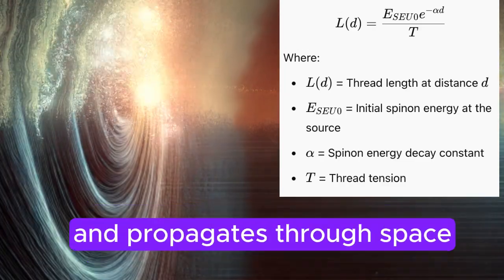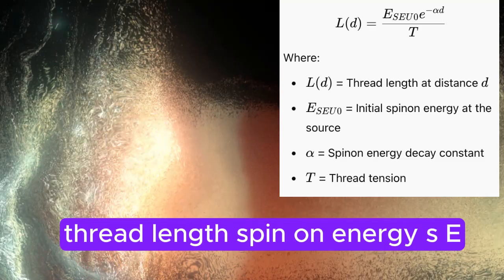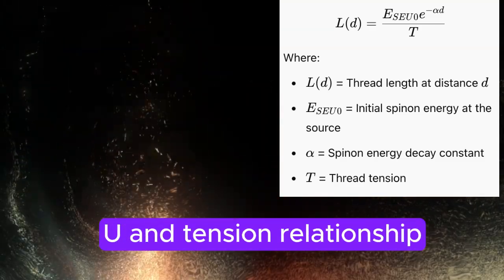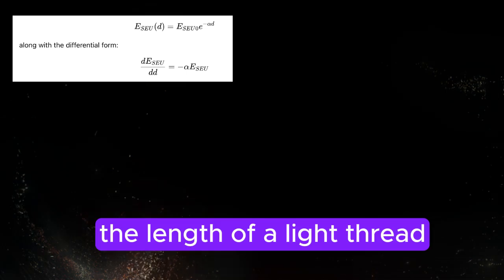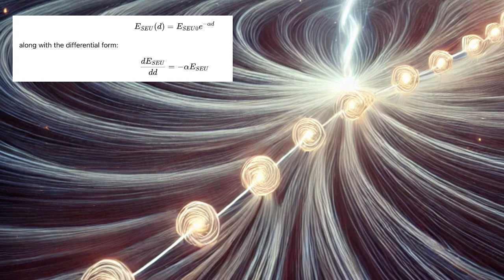The thread extends from the emission source and propagates through space as long as the spin-ons supply energy. Thread length, spin-on energy (SEU), and tension relationship: The length of a light thread is directly related to the energy of the spin-ons energizing it.